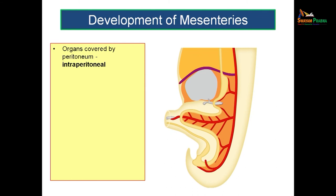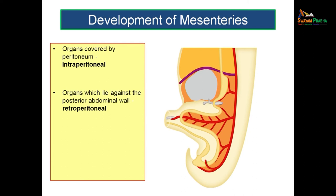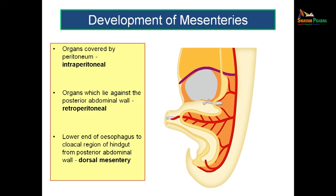The organs covered by peritoneum are called intraperitoneal, and the organs which lie against the posterior abdominal wall and are covered on only one aspect are called retroperitoneal. Intraperitoneal does not mean the organs are kept within the peritoneal cavity. Just as the heart is not inside the pericardial cavity and the lung is not inside the pleural cavity, the abdominal organs are not inside the peritoneal cavity. Intraperitoneal means the entire organ has peritoneal relation. Retroperitoneal means the structures have moved towards the posterior abdominal wall so that one aspect of the organ has no peritoneal relation — the peritoneum covers only the other aspect.